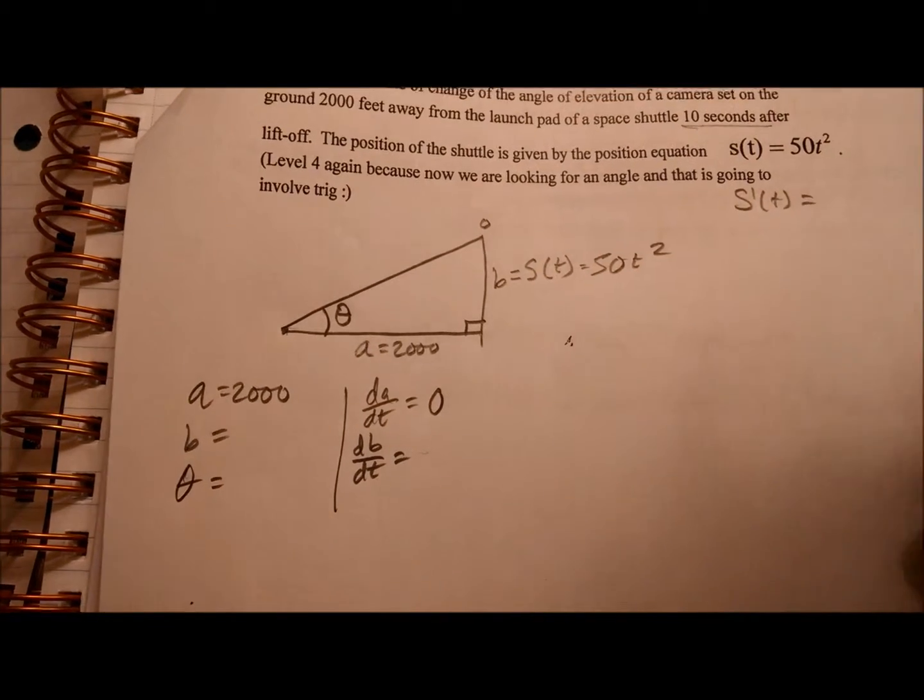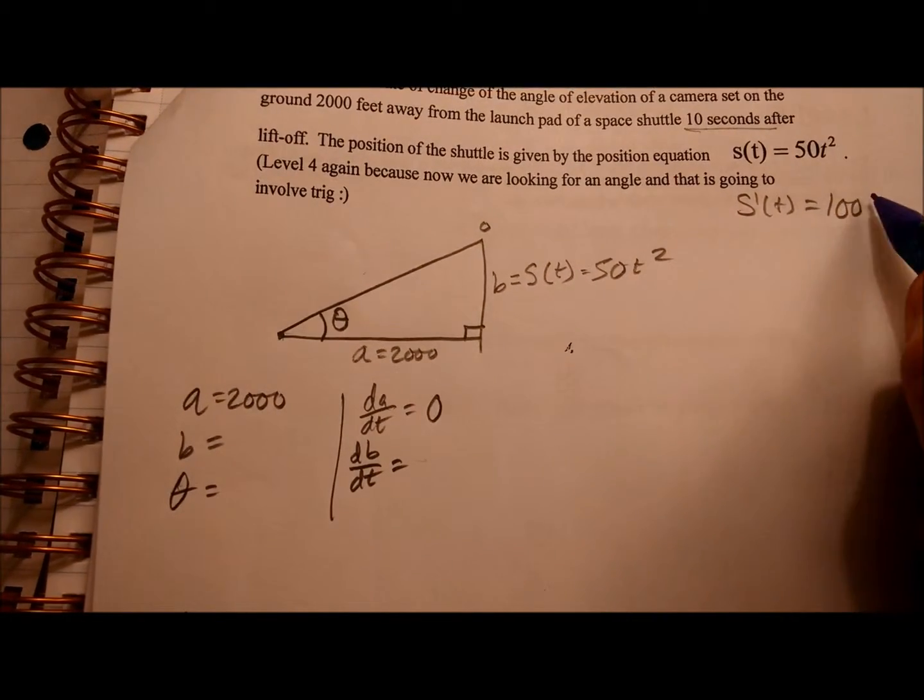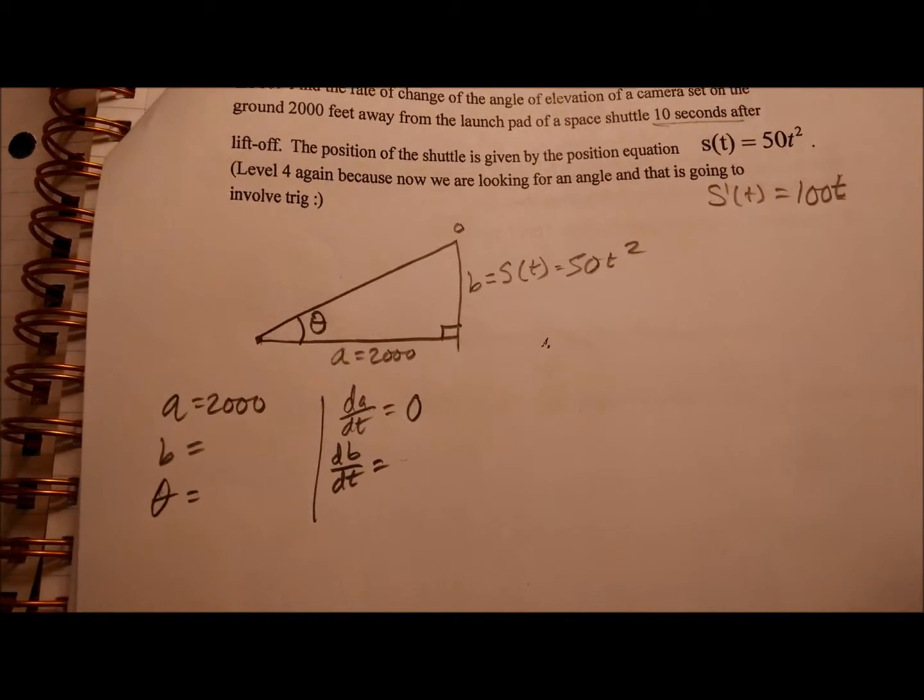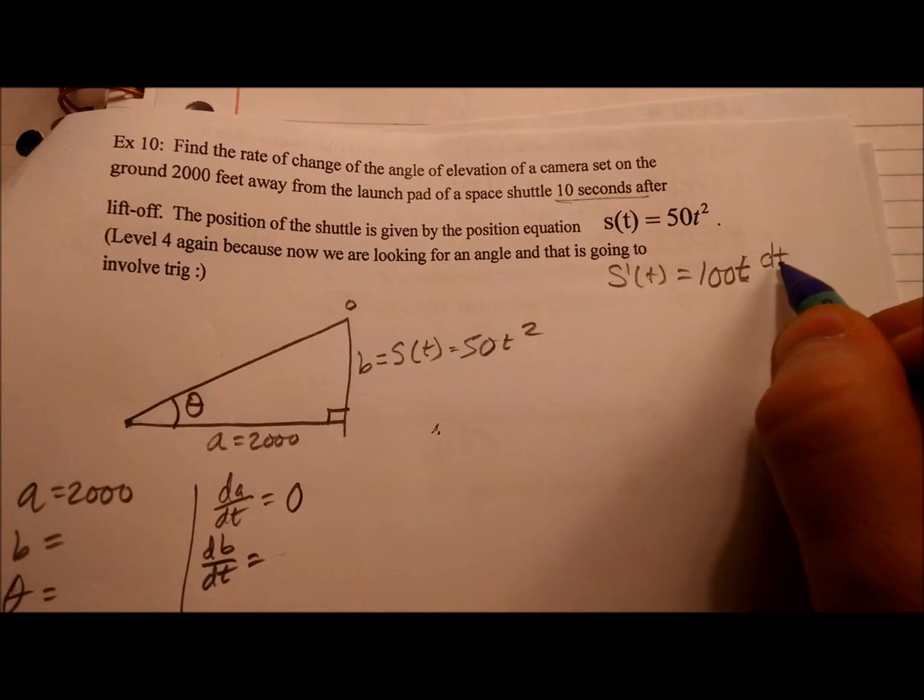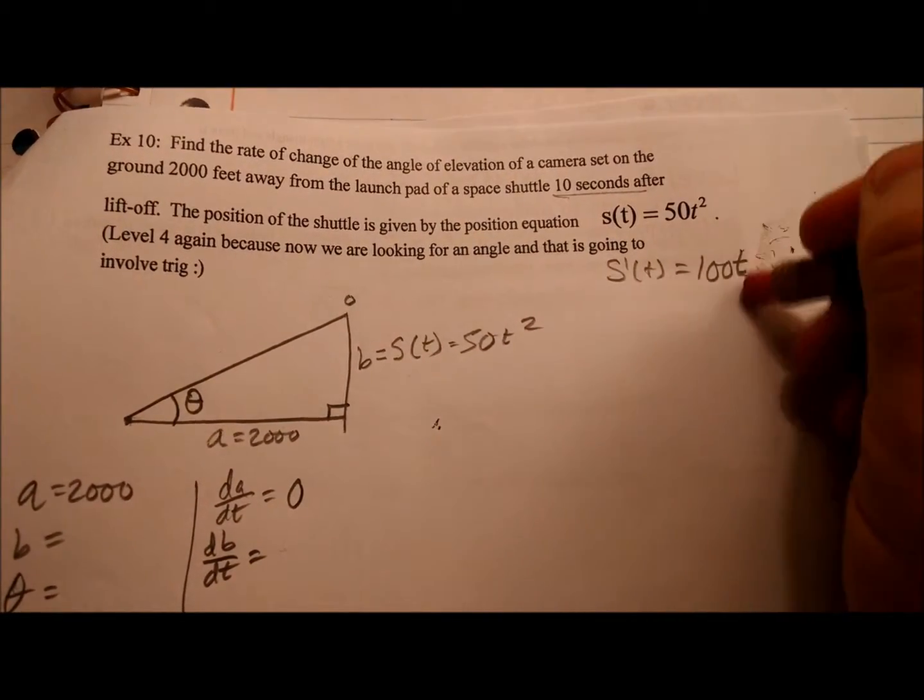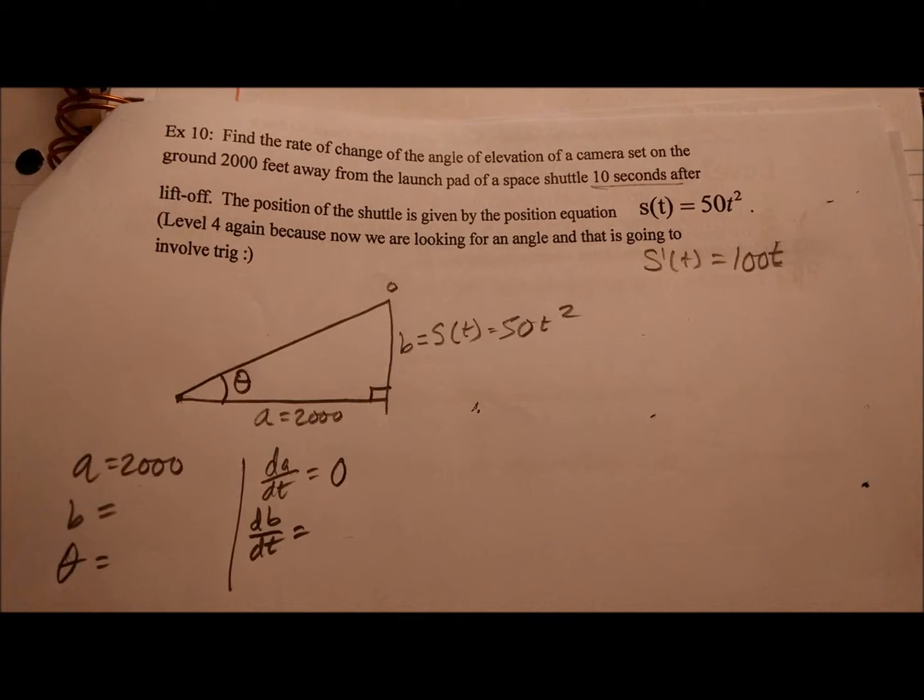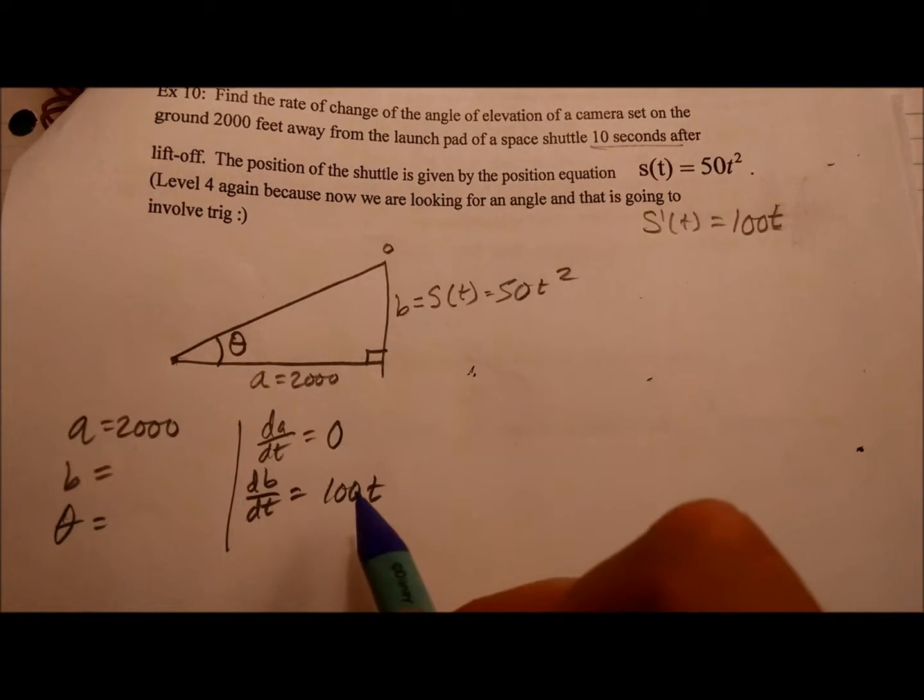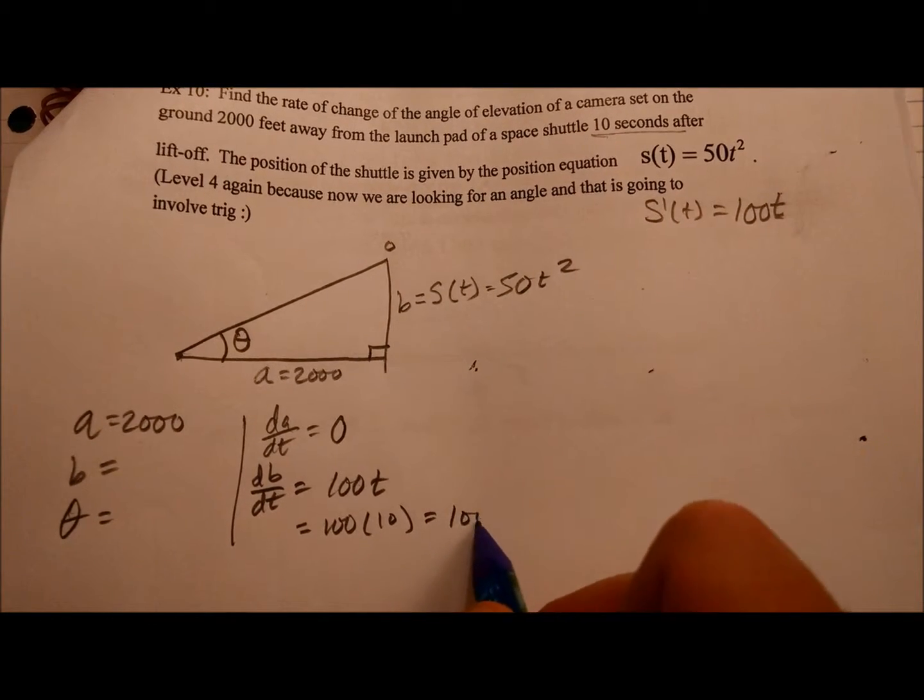We've been taking derivatives with respect to time. Well, that happens to be the variable here. So if I take that derivative, I get 100T. And you might be thinking, Mr. Canfield, every time we've done this you've said you have to put a D whatever DT. Well, okay, if we did that, what would we get? What's DT DT? It's just one. Since T is the letter that we're paying respect to, that would be S of T's derivative. So DBDT is actually 100T. And if we think about that, specifically here, DBDT would be 100 times that 10 seconds, or 1,000.